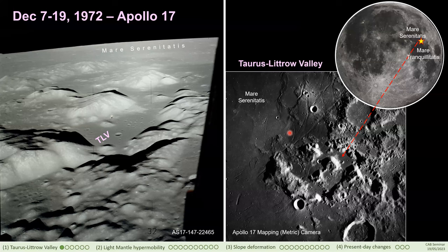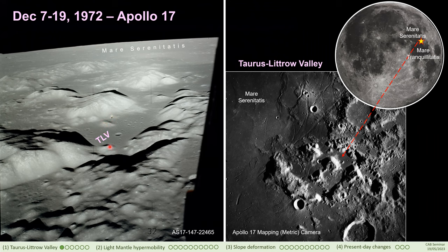Taurus-Littrow Valley was the destination of the Apollo 17 mission in 1972. It's located between Mare Serenitatis and Mare Tranquilitatis, two of the large impact basins on the Moon. Here on the left we have a cool oblique view of Taurus-Littrow Valley taken from the lunar module. Essentially it is a graben — one of the valleys bounded by normal faults created in response to extensional stresses following the formation of large impact craters early in the geological history of the Moon.